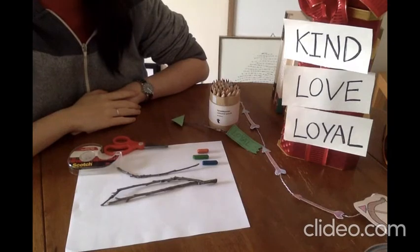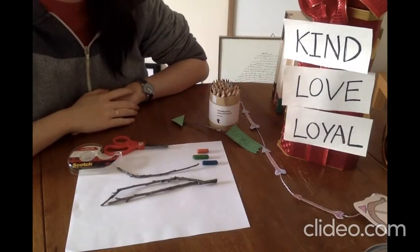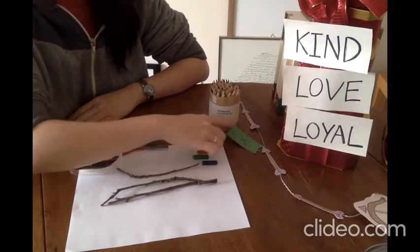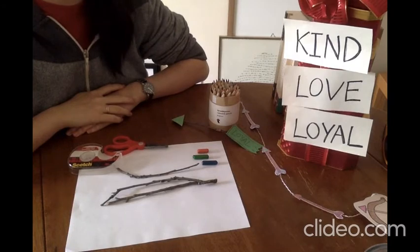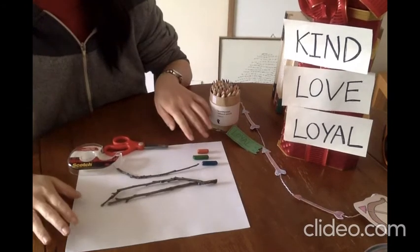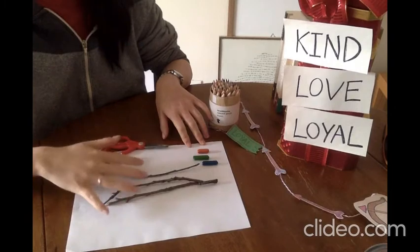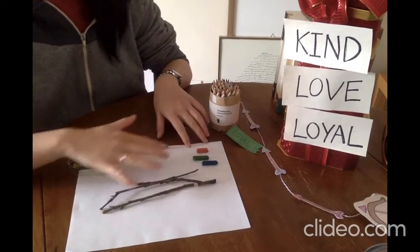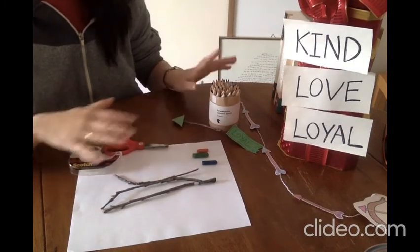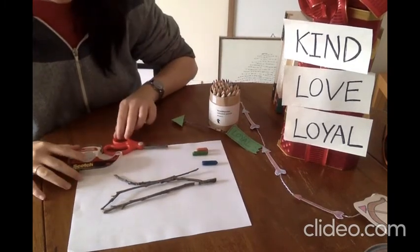For our craft today, we're going to recreate the three arrows Jonathan shot into the sky and remind us what a true friend is. So, for this craft, you'll need a few things. You'll need a piece of paper, three twigs or sticks that you find from outside, some crayons or colored pencils, and scissors and tape.